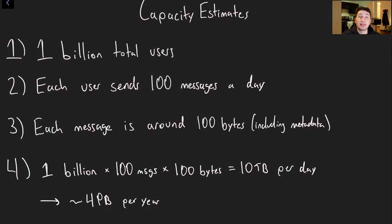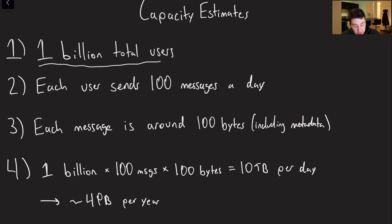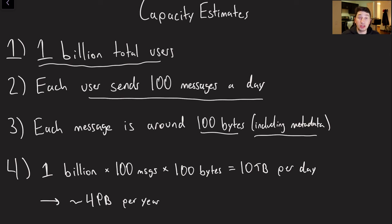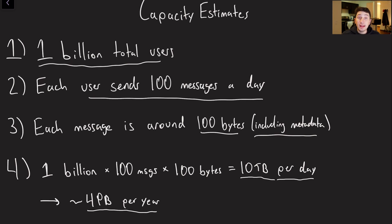Let's get into some capacity estimates. Let's imagine around one billion total users — about one eighth of the globe, which is roughly how many users Facebook has. If each user sends around 100 messages a day, and each message is around 100 bytes including metadata, multiplying those together gives us around 10 terabytes of data per day. Multiplying by 400, that's about four petabytes per year — a lot of data, but affordable for a company like Facebook with proper partitioning.